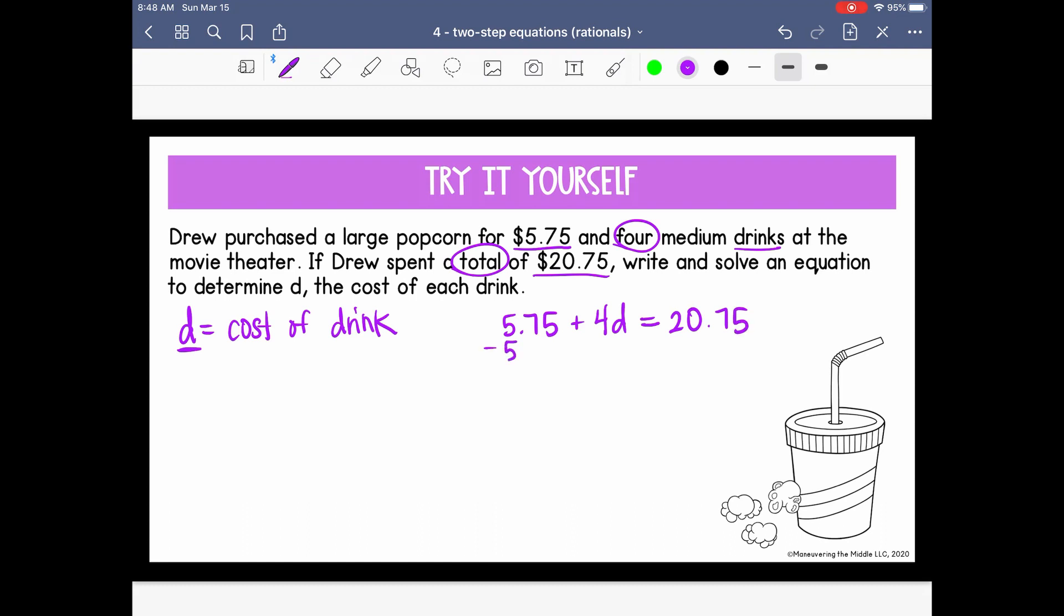Let's solve for D by first removing this constant term of $5.75. Okay, so it cancels from the left. So we now have four D equals $15. Now four is being multiplied by D. So let's isolate D by dividing both sides by four. And so D equals 15 over four, but we don't want to leave it as a fraction since we're talking about money. So if we divide 15 by four, we get $3.75.